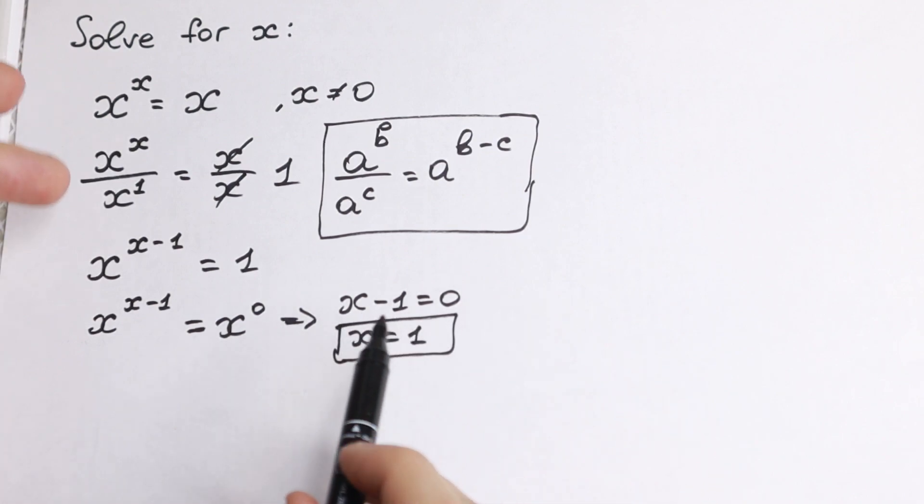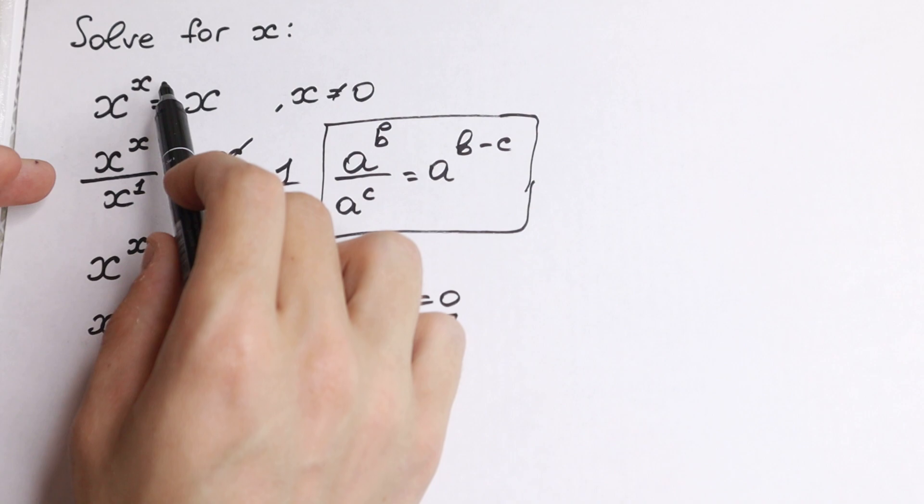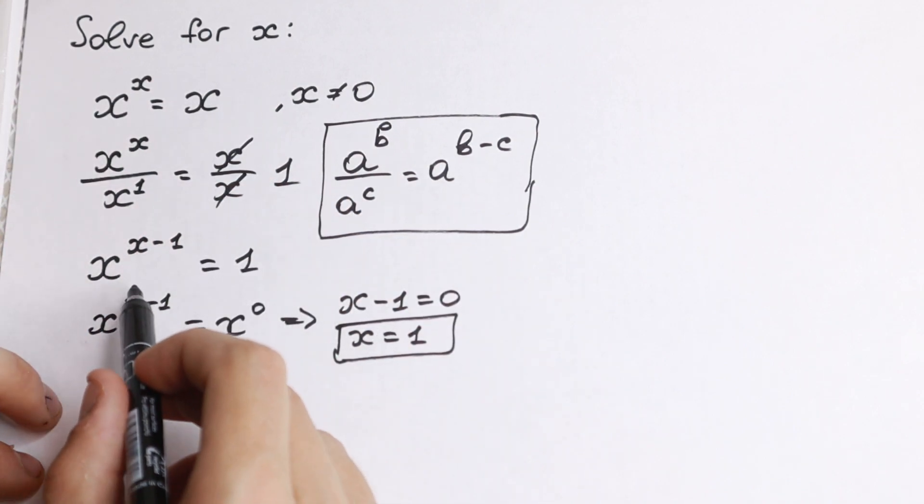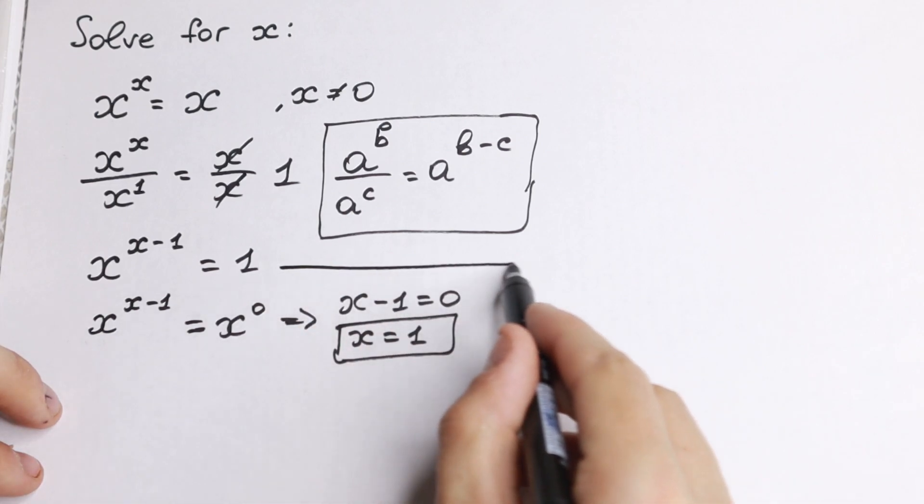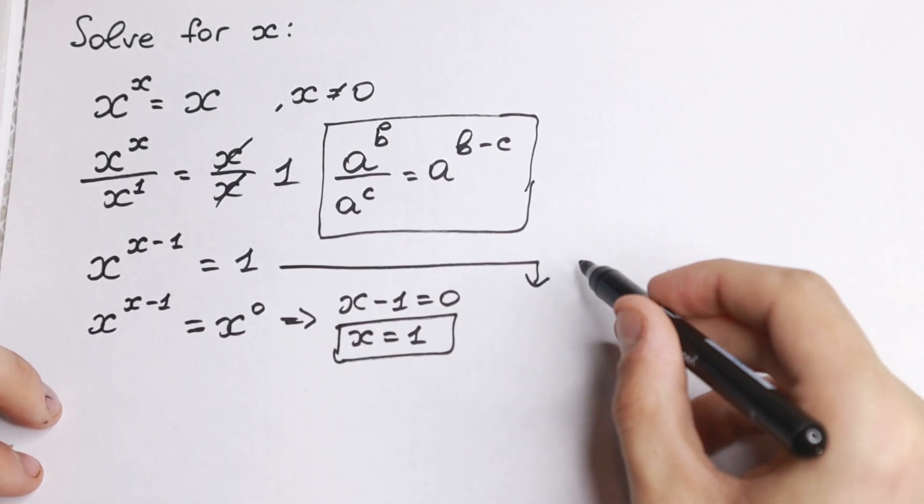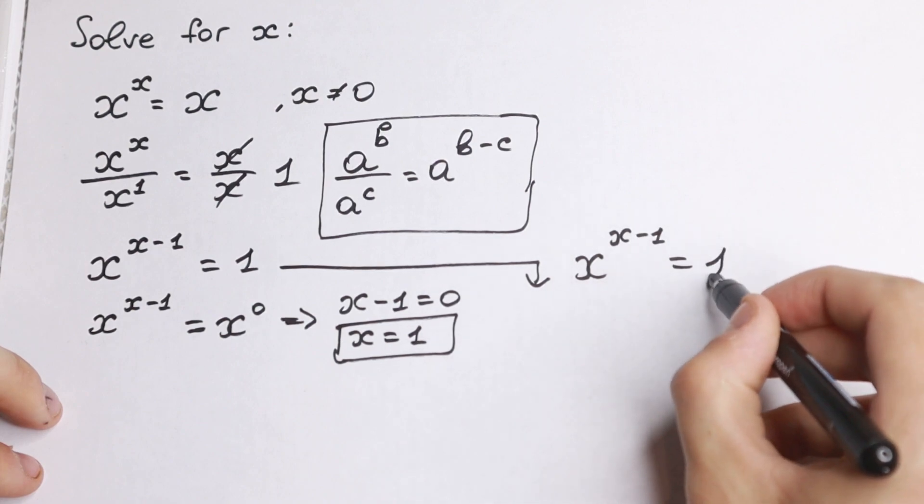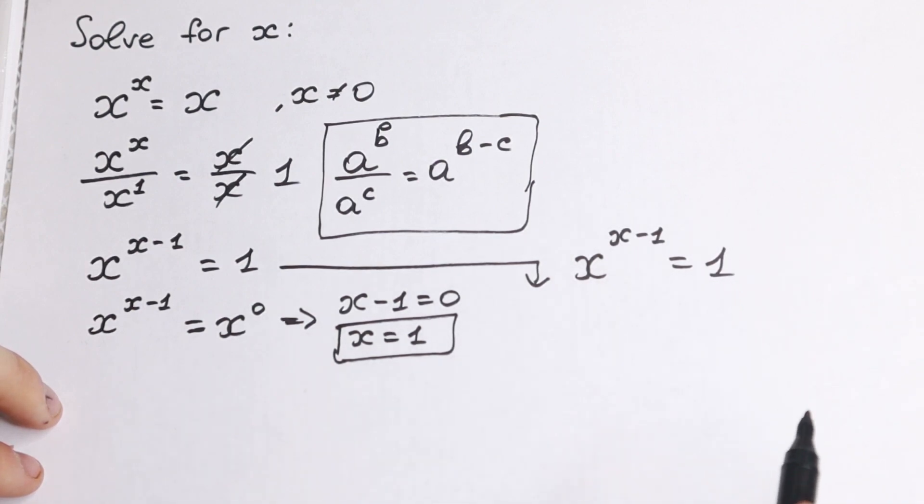But why I simplify this like that? Because we can easily find our root faster. Because this expression we need to find our second root. So the second expression x to the power x minus 1 equal to 1. This is good for us because we will find our second root right here.